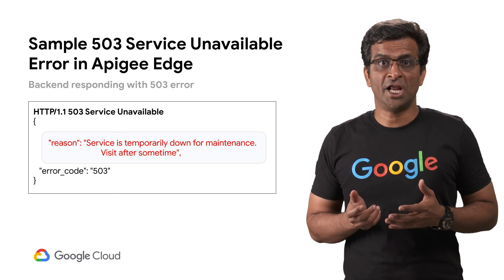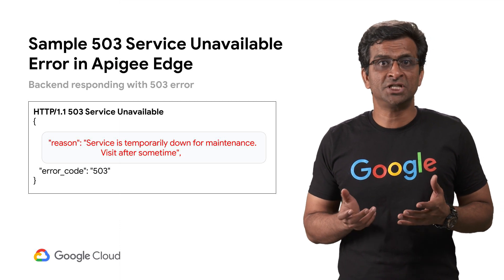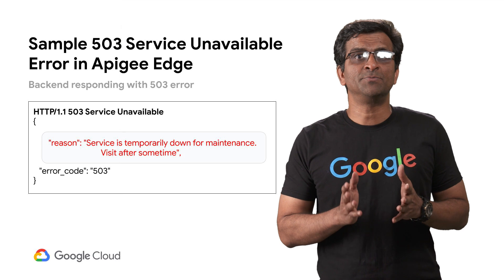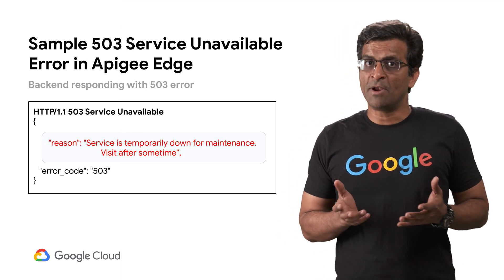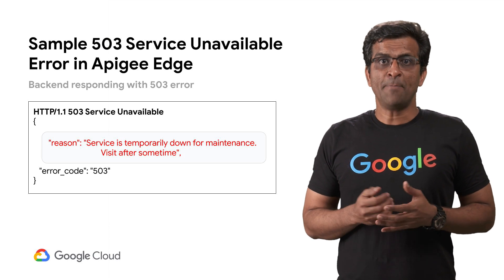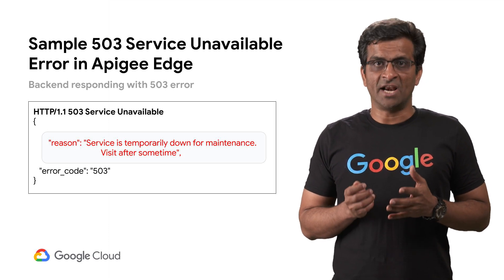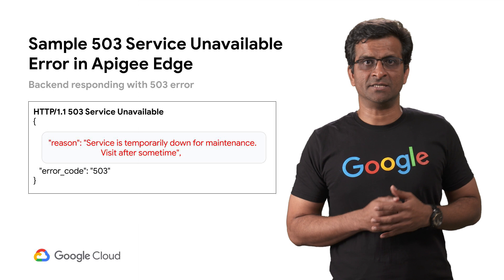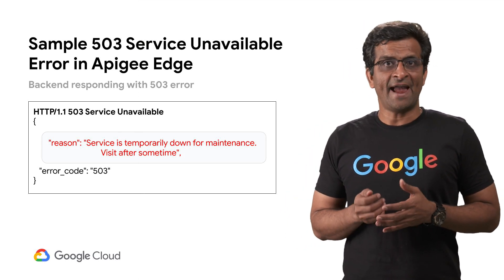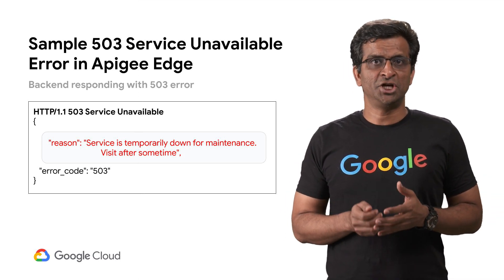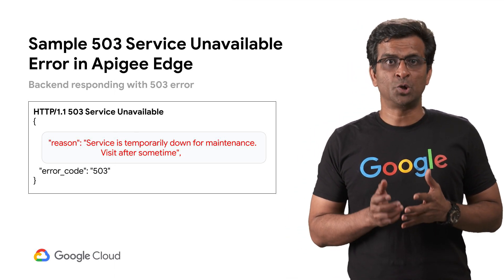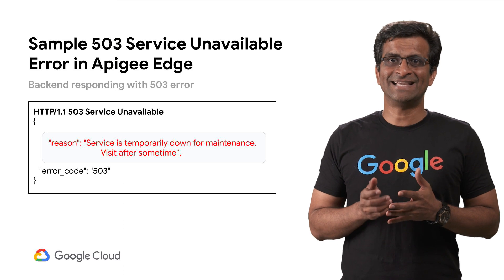There could be scenarios where back-end servers may just set the error response code as 503 without any response message. Keep in mind, whenever a back-end service responds with a 503 error, APG Edge returns the error and the response message as-is to the clients. In addition, APG Edge sets the error or fault code as messaging.adapters.http.flow.errorResponseCode and stores this information in analytics as well.